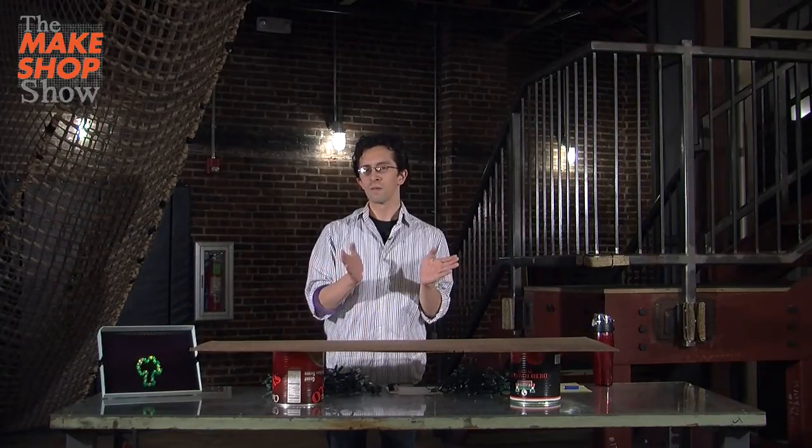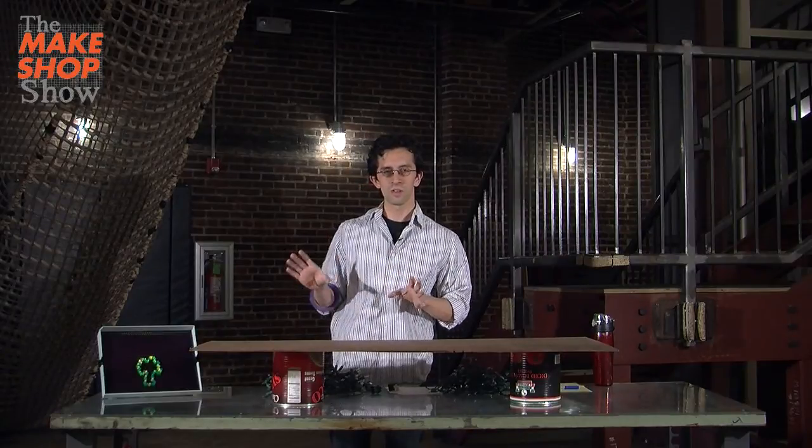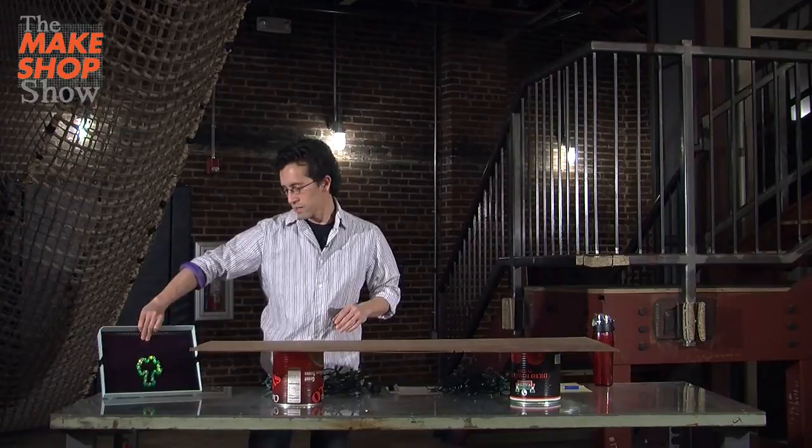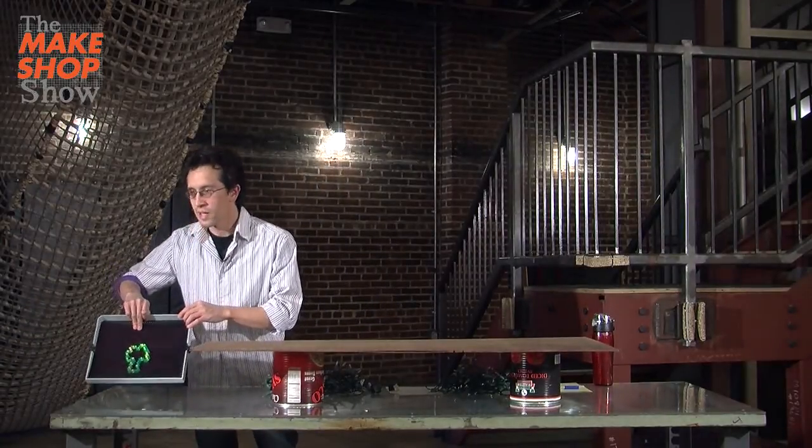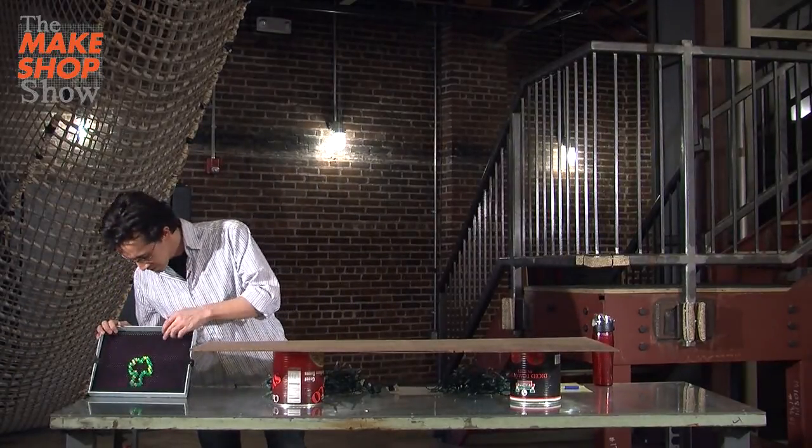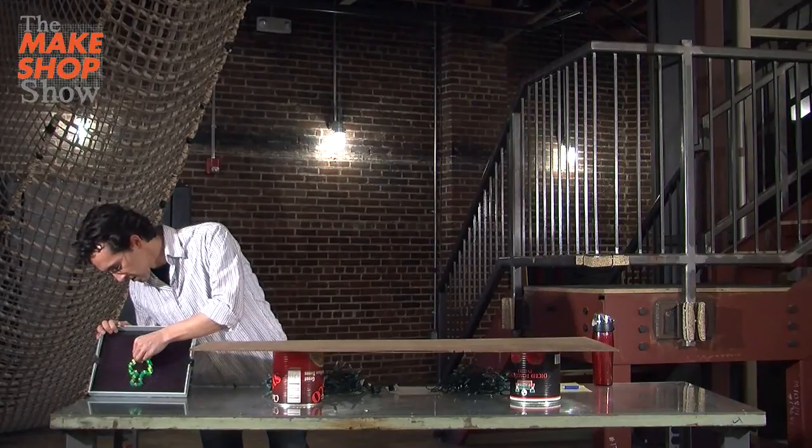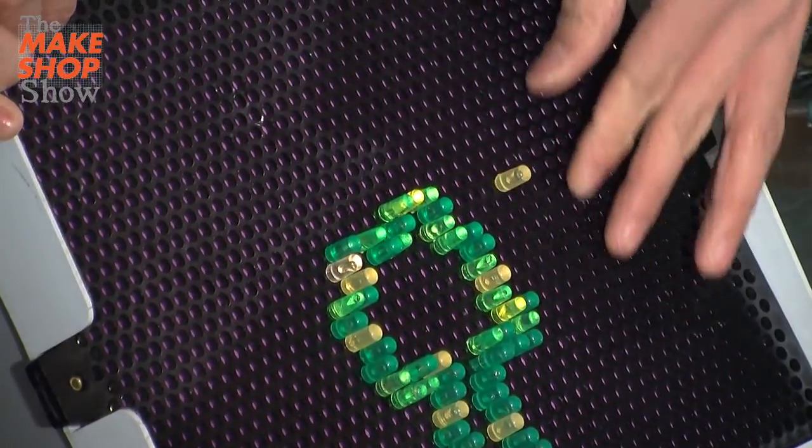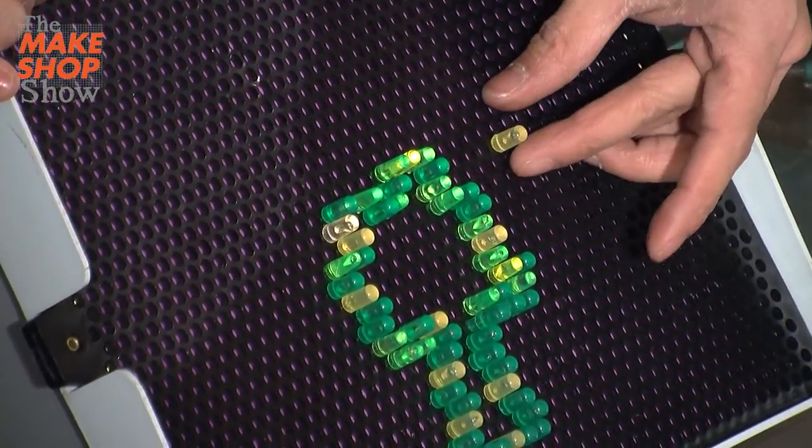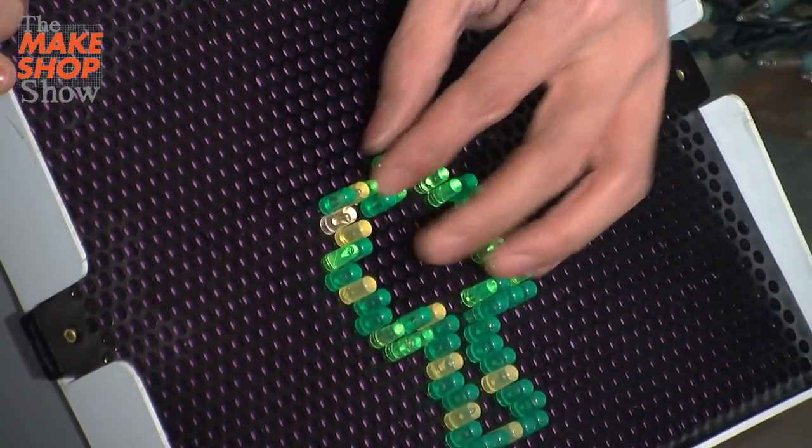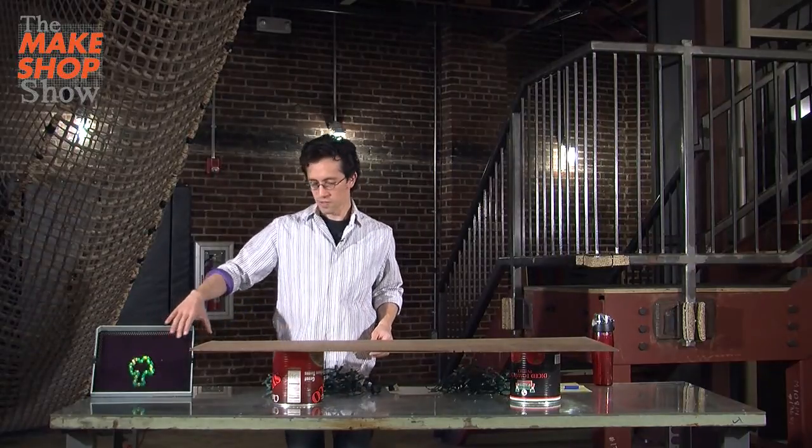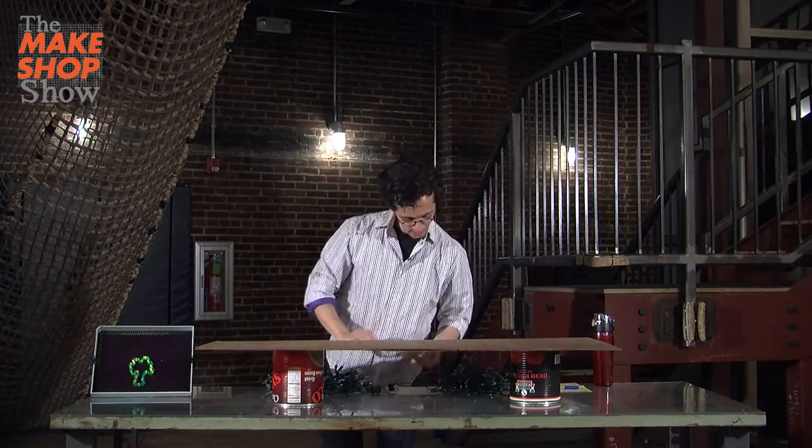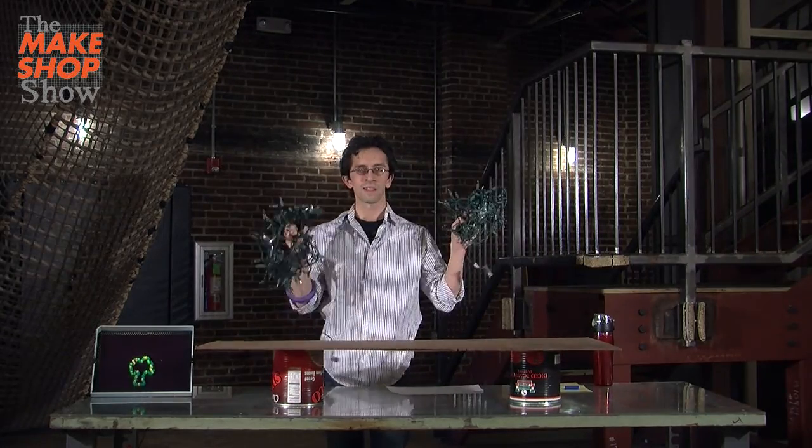Hey Makers! Today we're going to be making a Lightbrite, an old sort of toy - maybe your parents had one. They're really cool. You've got a grid with holes in it and you take all sorts of little colored pegs and use them to make a design, like this broccoli. Now these are little ones, we're gonna make a huge one out of some pegboard and some holiday lights.